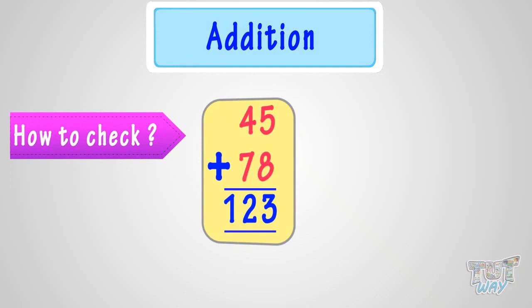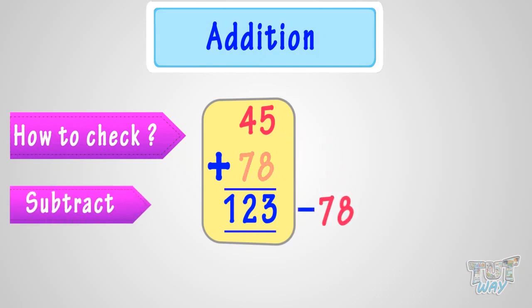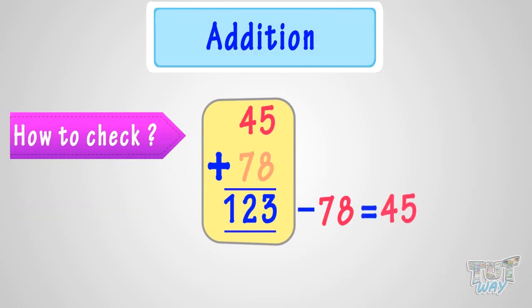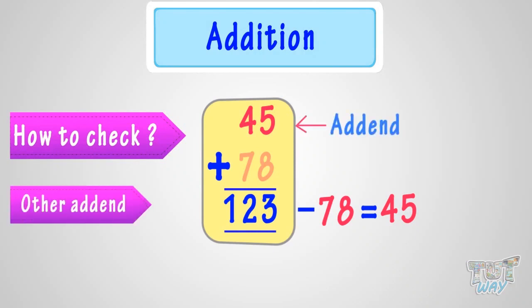So let's subtract 78 from 123. We get 45, and 45 is the other addend. So this proves that the sum was correct.